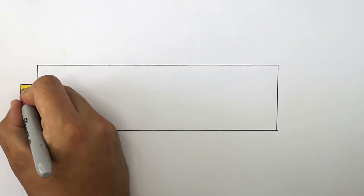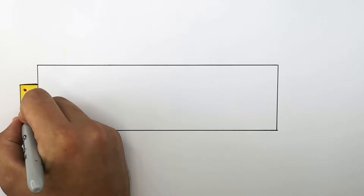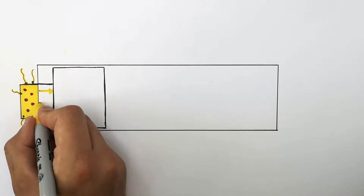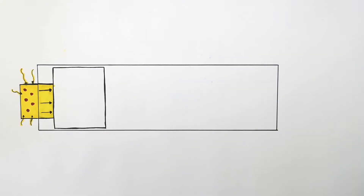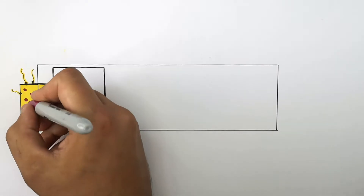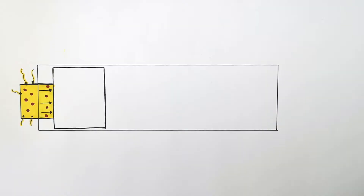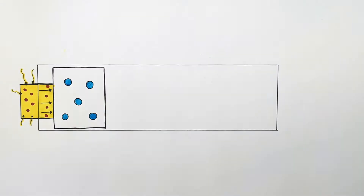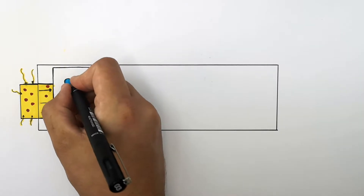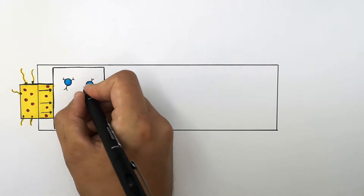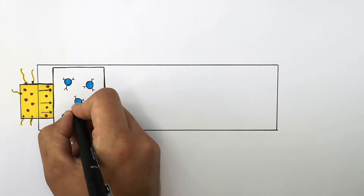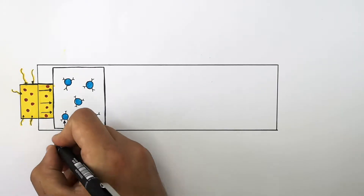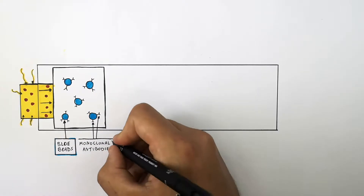Because she's pregnant, there's going to be the hormone HCG in her urine, which will then be transferred onto the part where she urinates. The urine is going to move through this first part of the pregnancy test. Inside this part, you're going to find blue dye beads — beads of blue coloured dye — and attached to the blue beads are monoclonal antibodies specific for the HCG hormone.